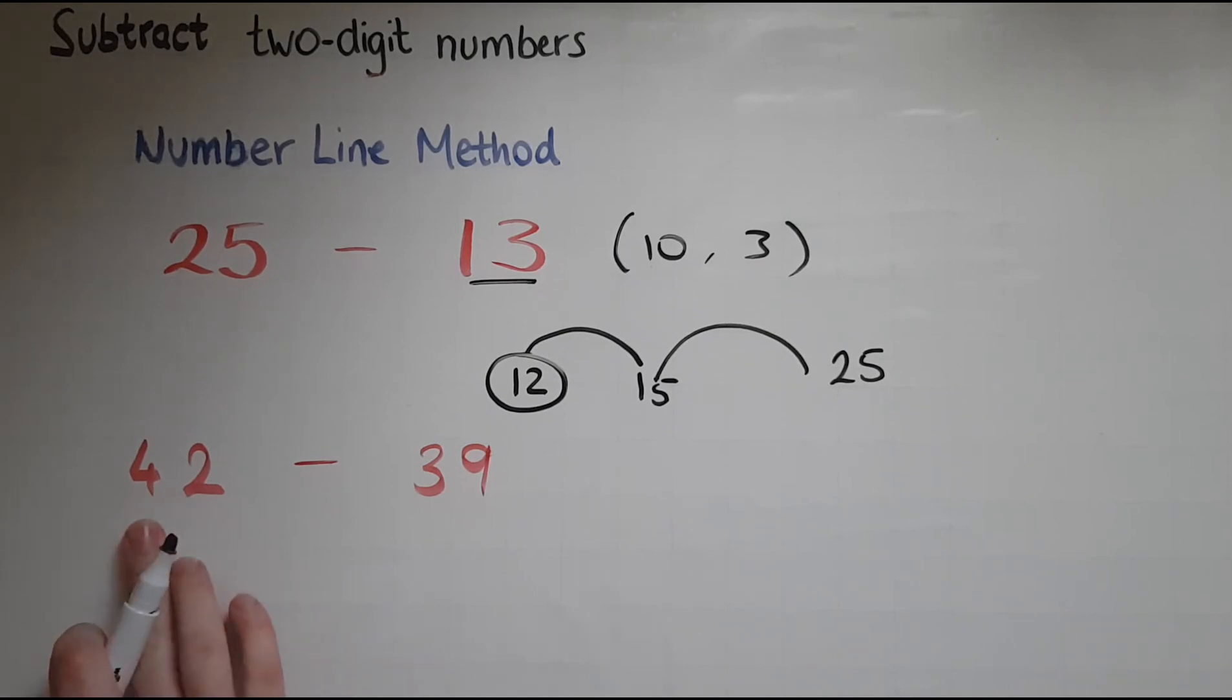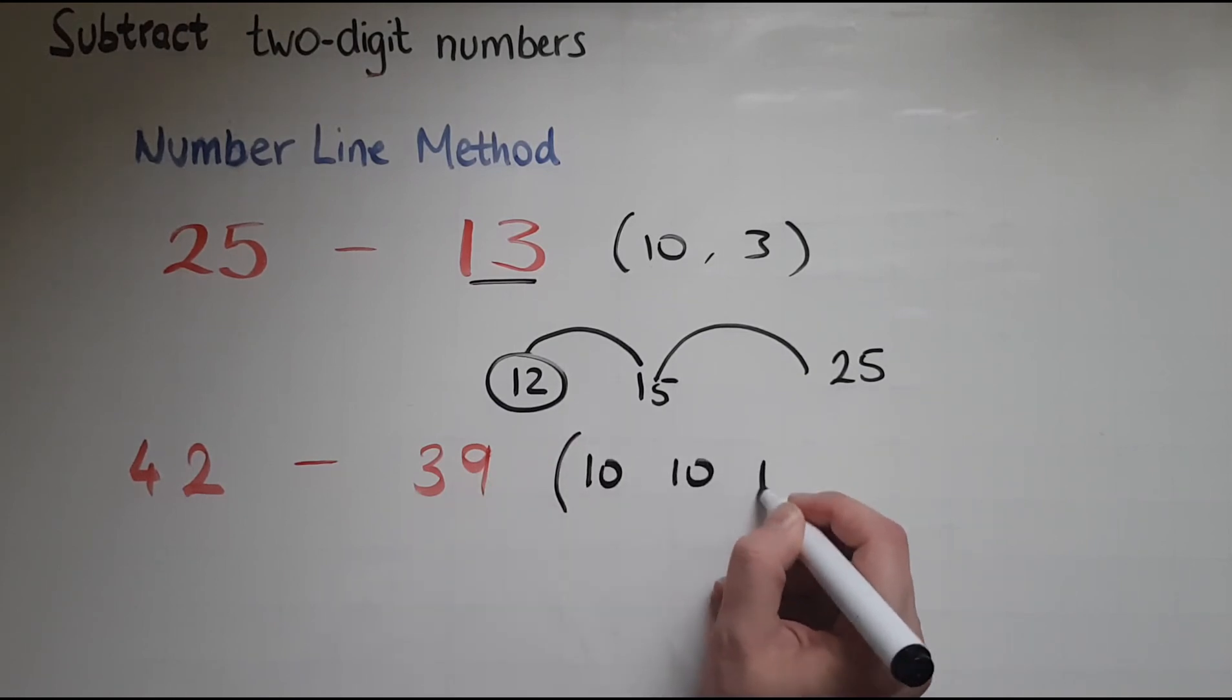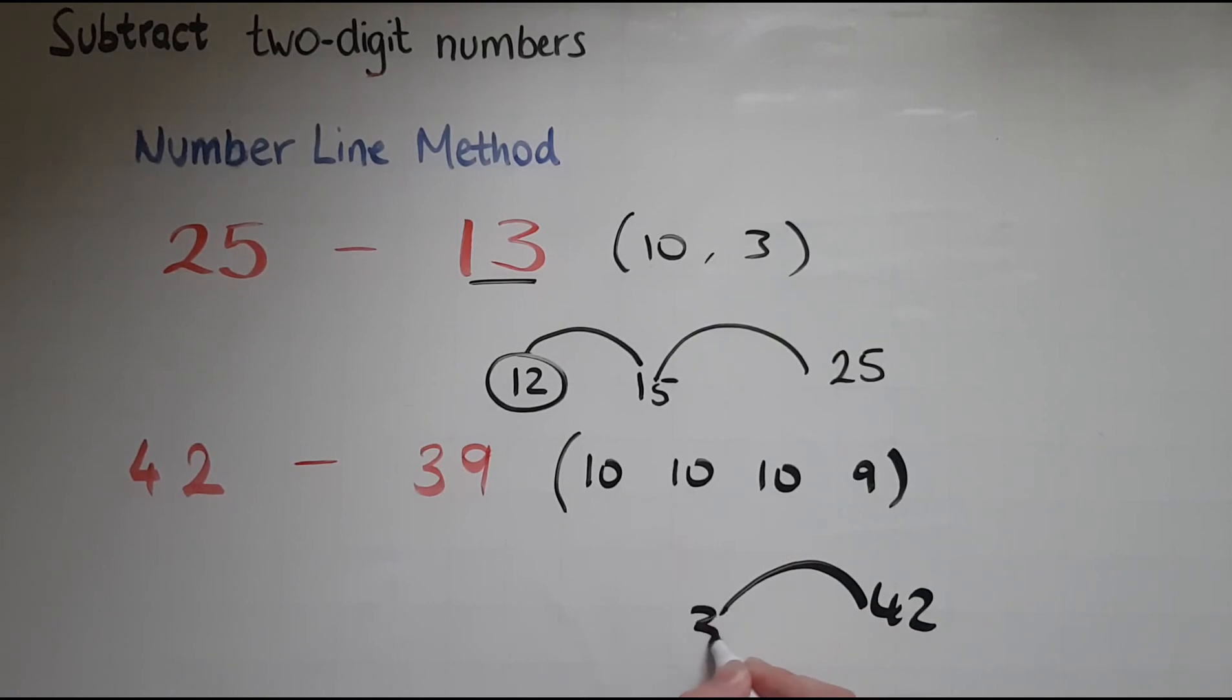Now I'll do the same with 42 take away 39. So in my mind I've got 39. It's got 10 and 10 and 10 and 9. So I'll start with 42. Take away 10, that gives me 32. Take away 10, that gives me 22. And another 10, that gives me 12. Now from that I take away 9 and that leaves me with 3. So my answer is 3 for this. So this is how you use the number line method to subtract.